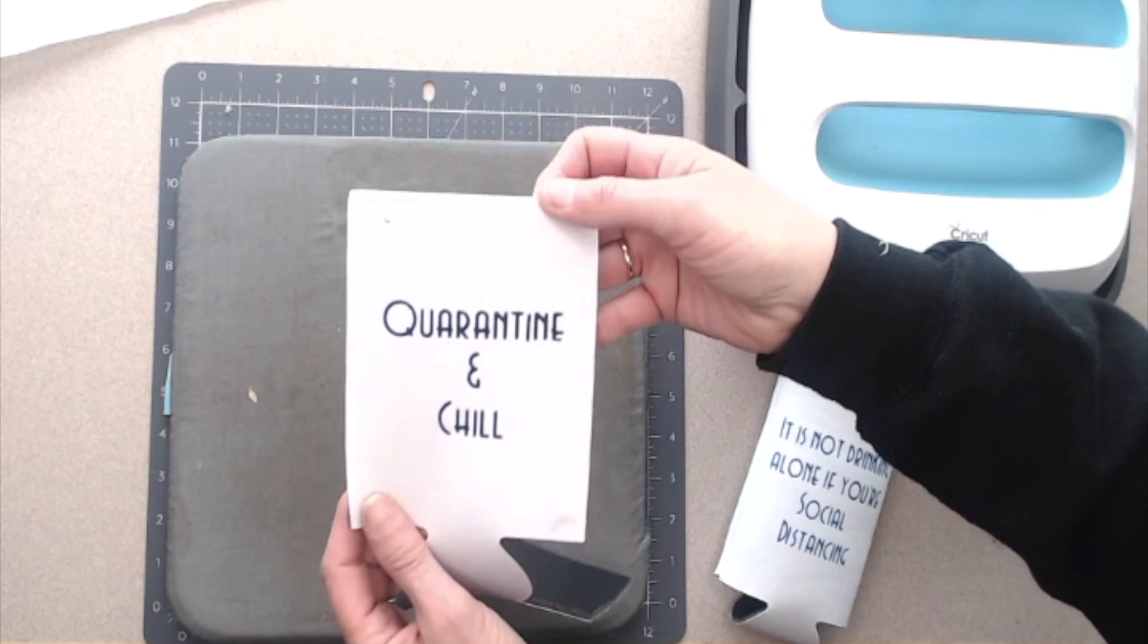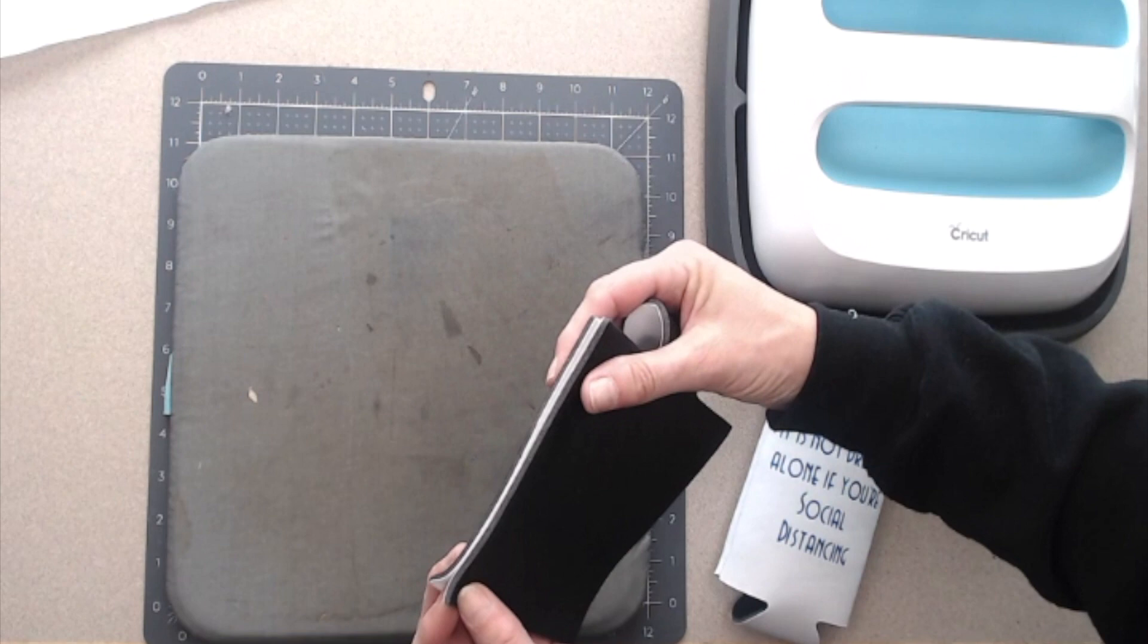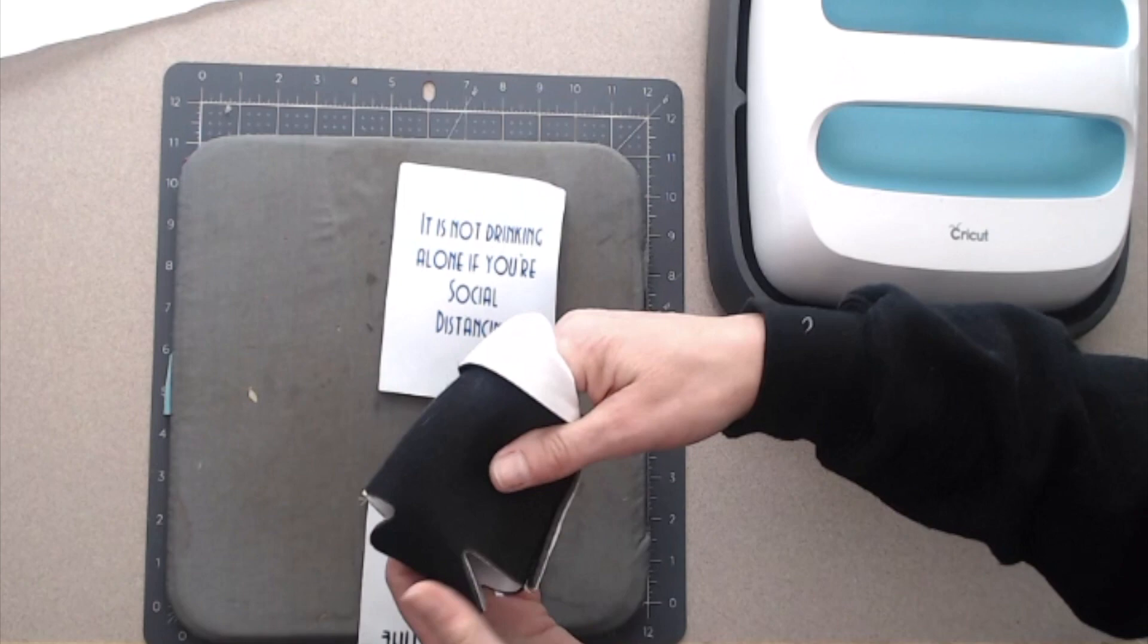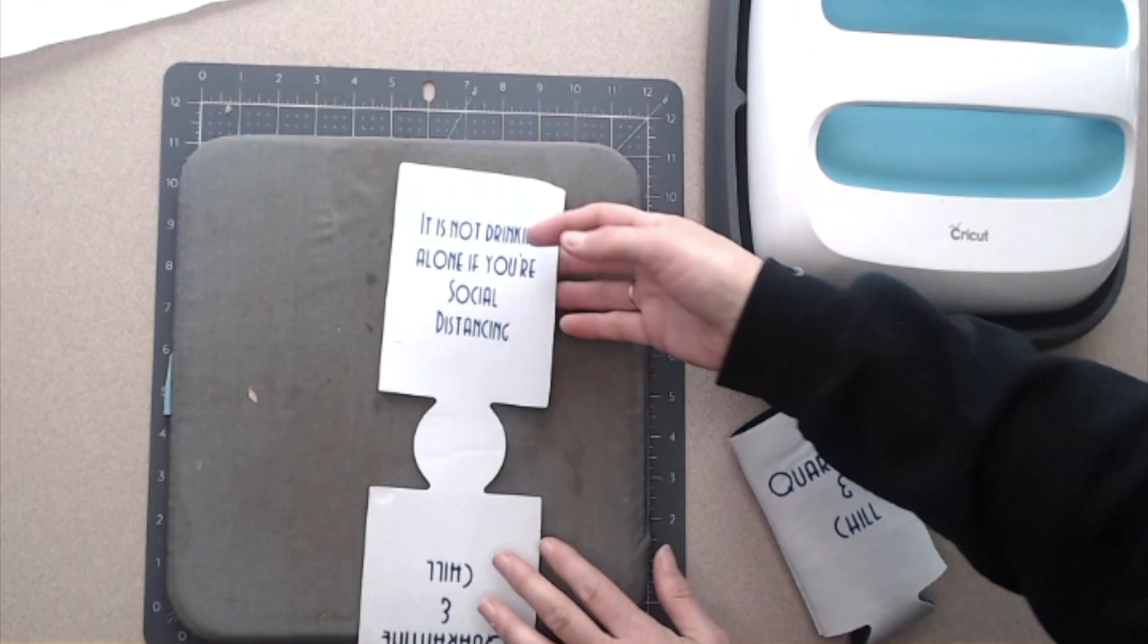So now the only other step I need to do is face these guys right sides together and take them over to my sewing machine. I am just going to put a very close seam right down the middle. I'll show you on this one. I can turn this one inside out, and you can see that I've just got a very close seam there. So that's all you need to do to finish these off. Let me go do that real quick. I'll be back and we'll be set.